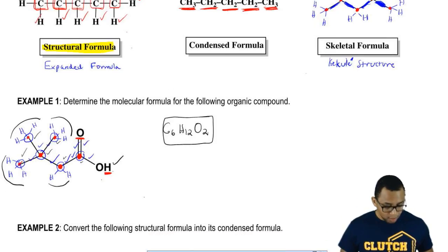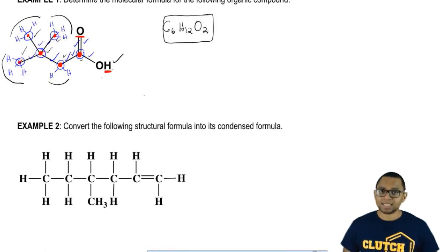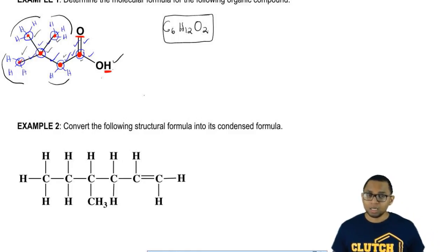Now that we've done that one, try to do this one. This one isn't written as a skeletal formula. I've shown it as an expanded or structural formula, so this one should be a lot easier. Just literally count the number of elements and then give me the structural formula for it. Come back, let's take a look at it once you've done that.